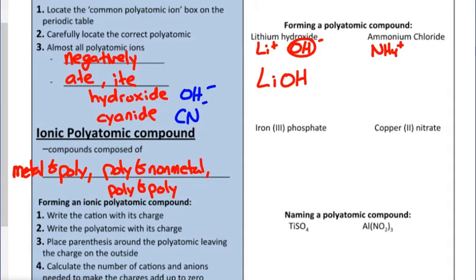For ammonium chloride: ammonium is the polyatomic ion with a positive charge. The chloride ion ends in -ide, so it's just chlorine with a negative one charge — not chlorate or chlorite, nothing with a -t, just the element chlorine acting as an ion. With plus one and minus one, we write this as NH4Cl — one ammonium ion, not four of them, because that four is part of the formula for ammonium itself.